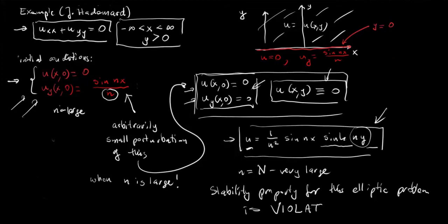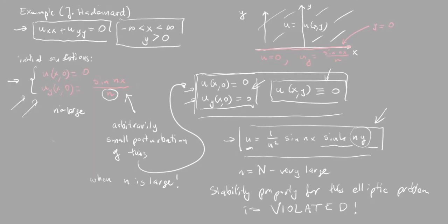So as I said, elliptic problems in two dimensions are in general not well posed because the solutions are not stable.